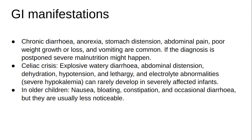GI problems usually start between the ages of 9 and 24 months in pediatrics. Chronic diarrhea, anorexia, stomach distension, abdominal pain, poor weight growth or loss, and vomiting are common. If the diagnosis is postponed, severe malnutrition might happen.